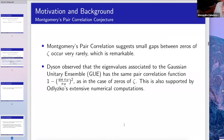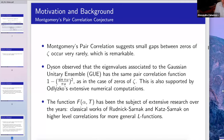As Dyson observed, there is a long story connecting random matrix theory and the Riemann zeta function and more general L-functions. You see the same function appearing in the Gaussian Unitary Ensemble that appeared earlier in that integral, and we have very extensive numerical computations where the distributions actually match perfectly.